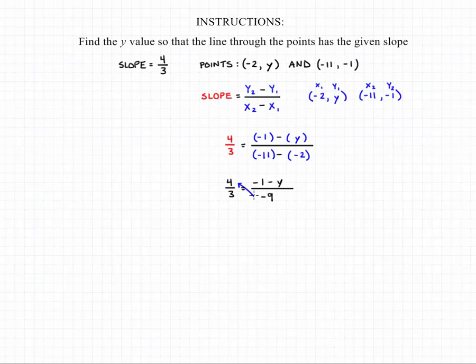From here we can cross multiply, and we're going to get 4 times negative 9 is equal to negative 1 minus y multiplied by 3.